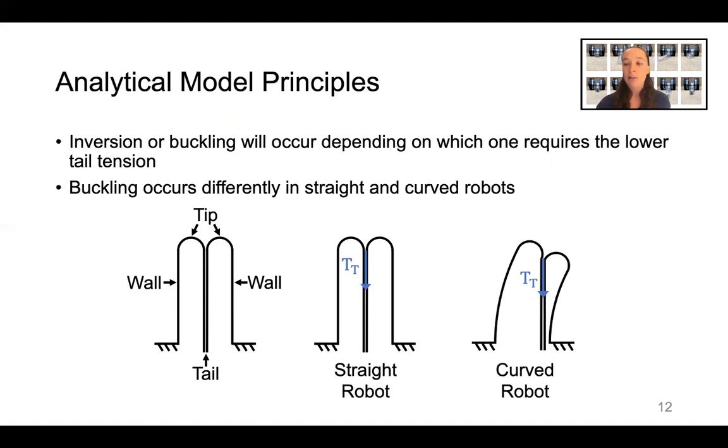By comparing the tail tension to invert the robot with the tail tension to buckle the robot, our model lets us predict when a soft-growing robot will buckle at various curvatures, pressures, and lengths.